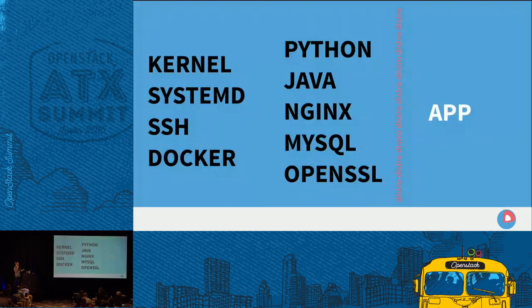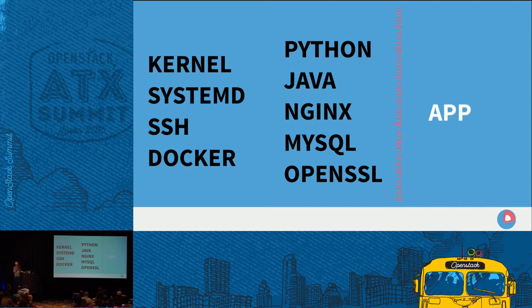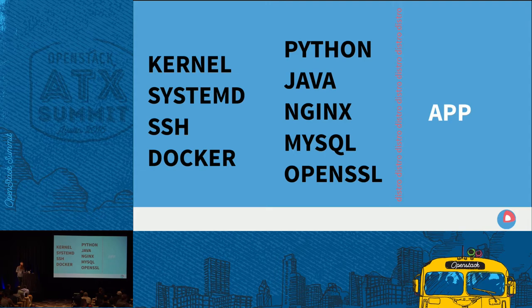This is what most people think of as a traditional Linux distro. Everything in black is the stuff the distro cares about and promises to manage for you; everything in white is the stuff you're supposed to care about. They claim you shouldn't care about the version of NGINX or MySQL, but in reality your application does care about those things deeply — it wants to know you're using a specific version of Python, which is why you end up with things like virtualenv.